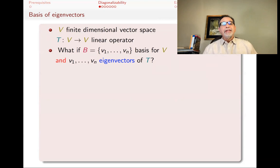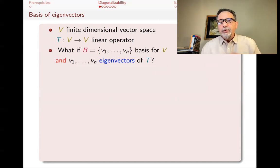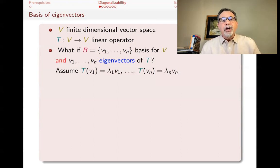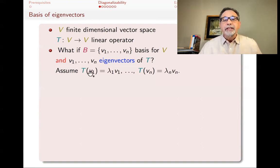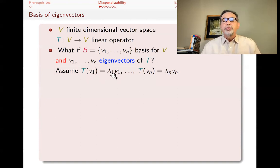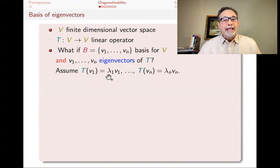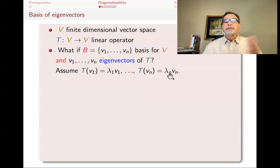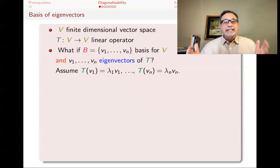If that happens, what is the matrix of T with respect to this basis? Let me remind you what eigenvectors are. To say V1 through VN are eigenvectors means that when you apply T to them, you get a scalar multiple of themselves: T(V1) = λ1·V1, T(V2) = λ2·V2, all the way to T(VN) = λN·VN. Some of these lambdas might be the same — we have a spanning set that's linearly independent for the vector space, such that all elements are eigenvectors.